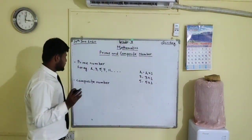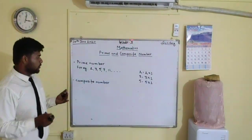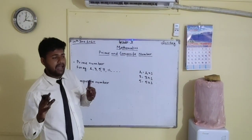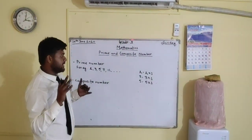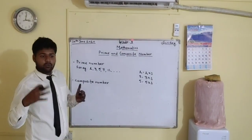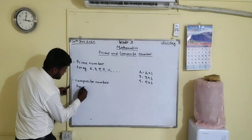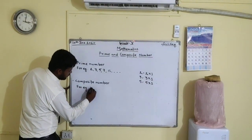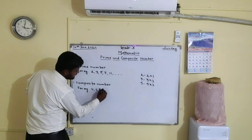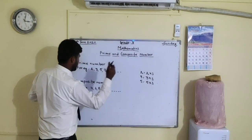Now what is a composite number? Composite numbers are those numbers which have at least one factor other than one and itself. It means it must have one factor other than one and itself. For example, 4, 6, 8, 9, 10 and so on.